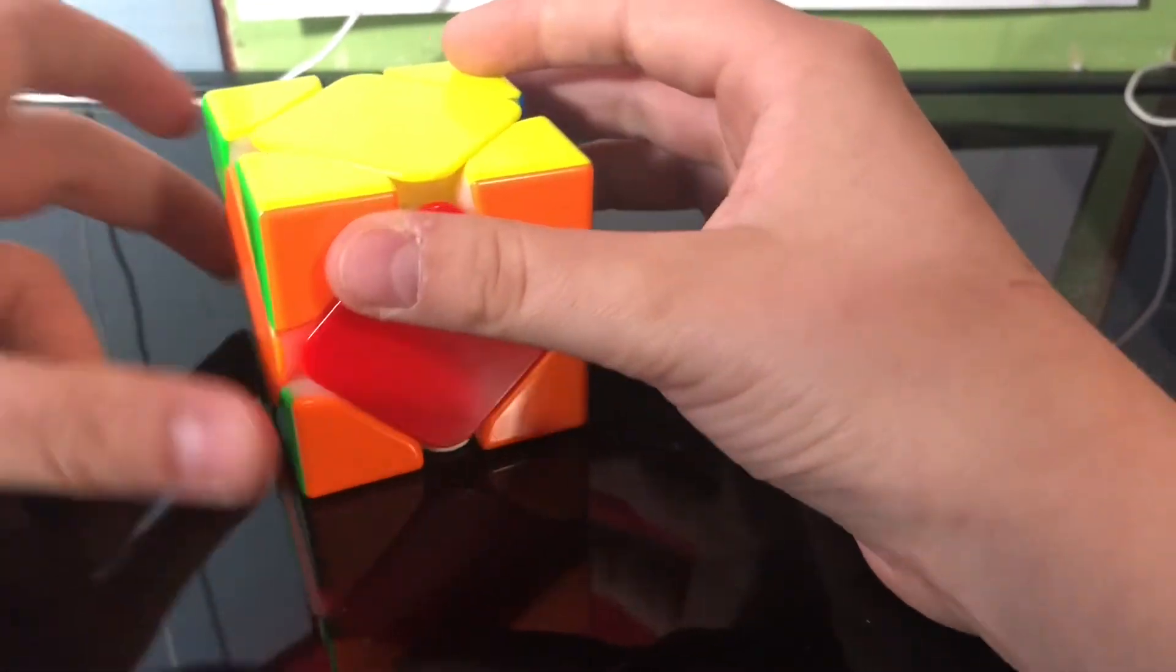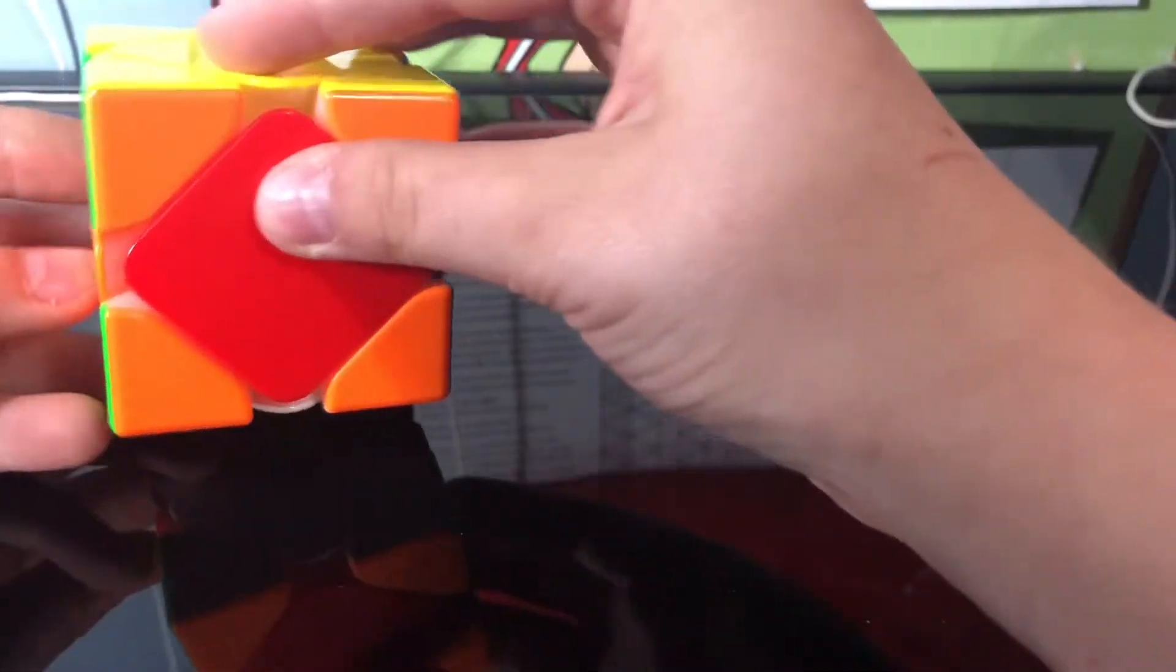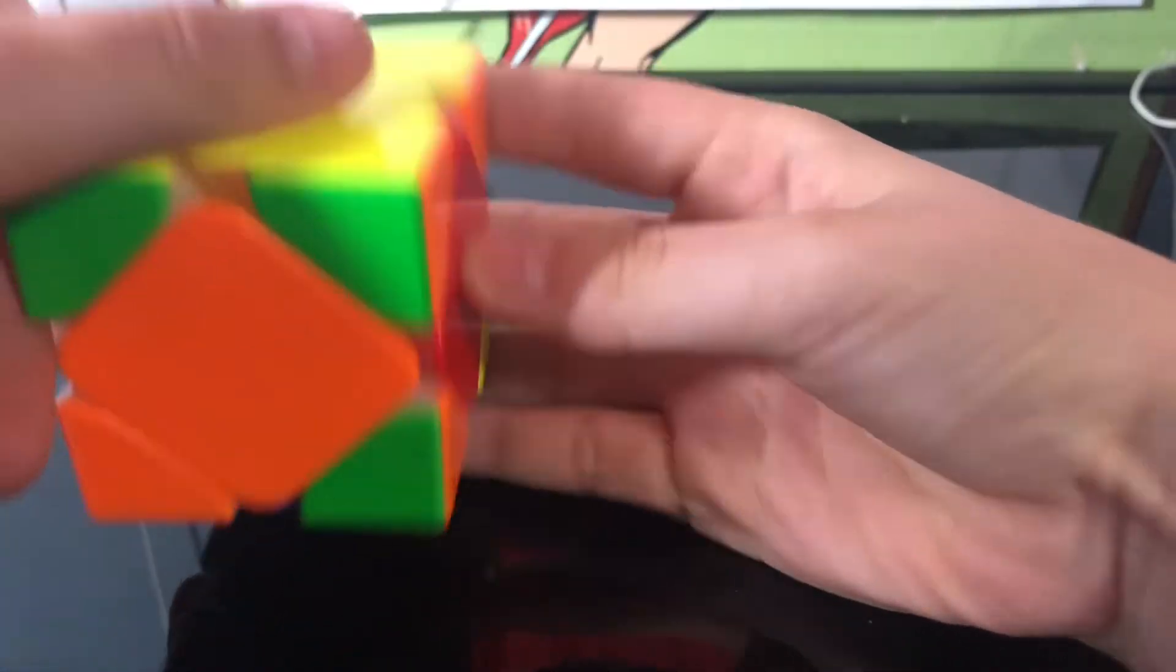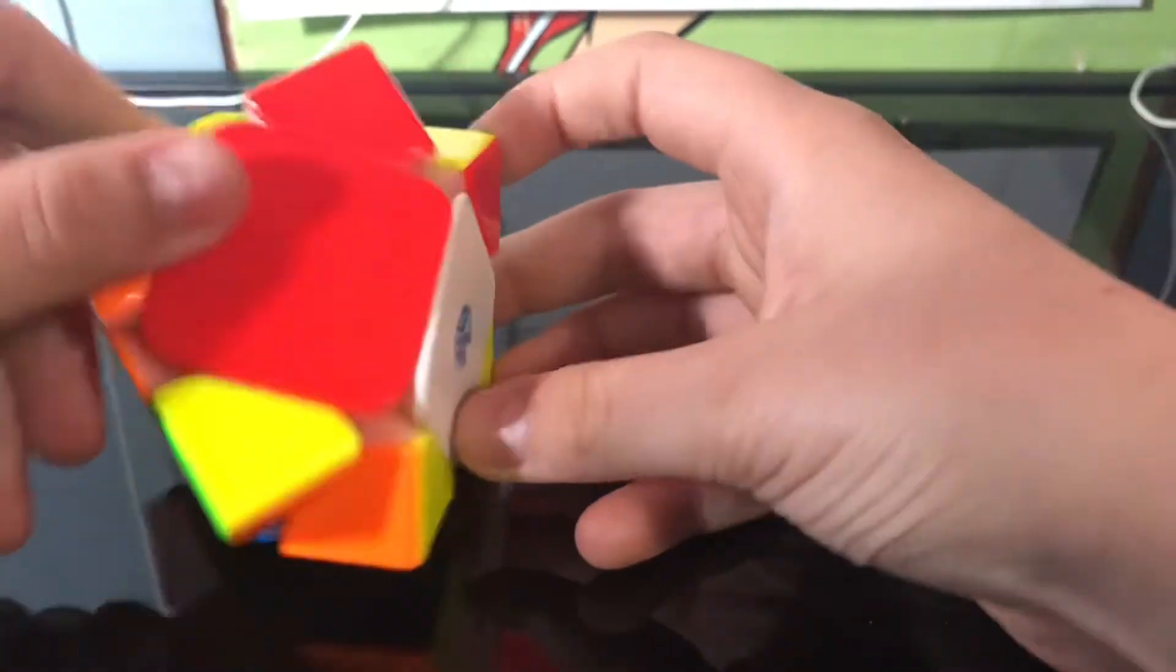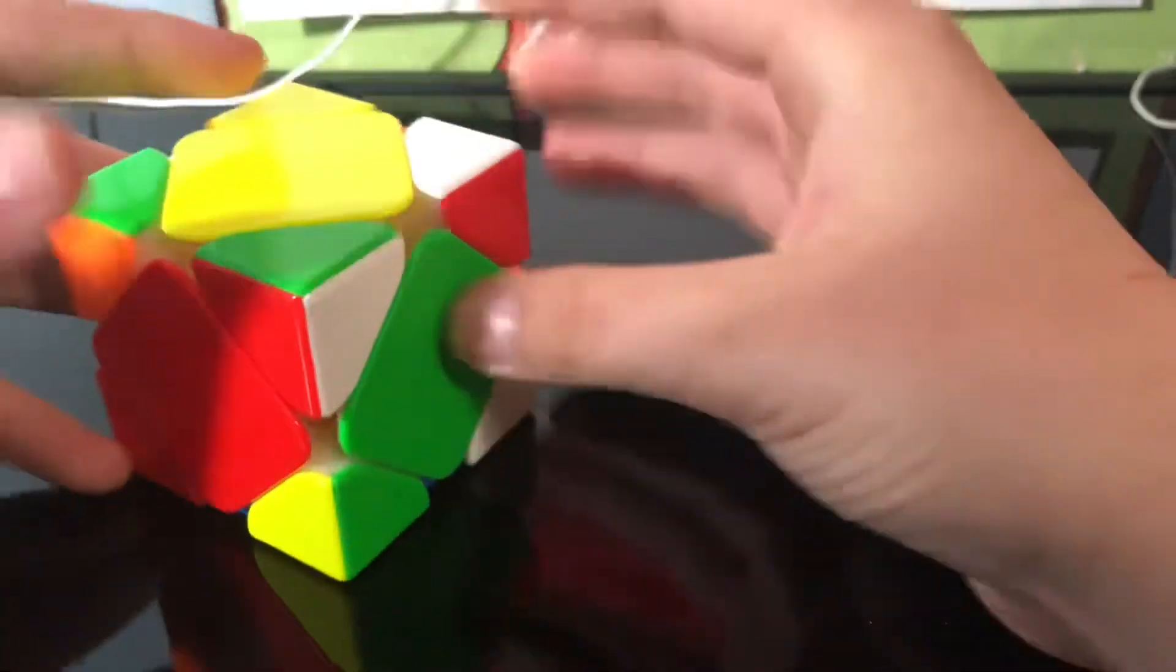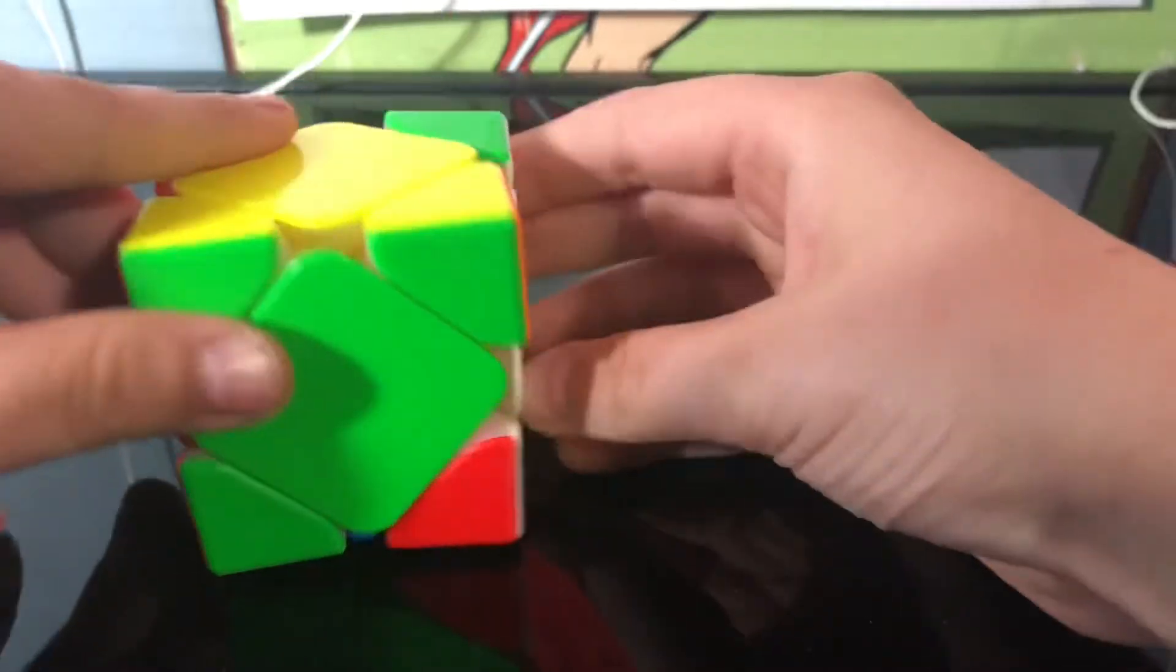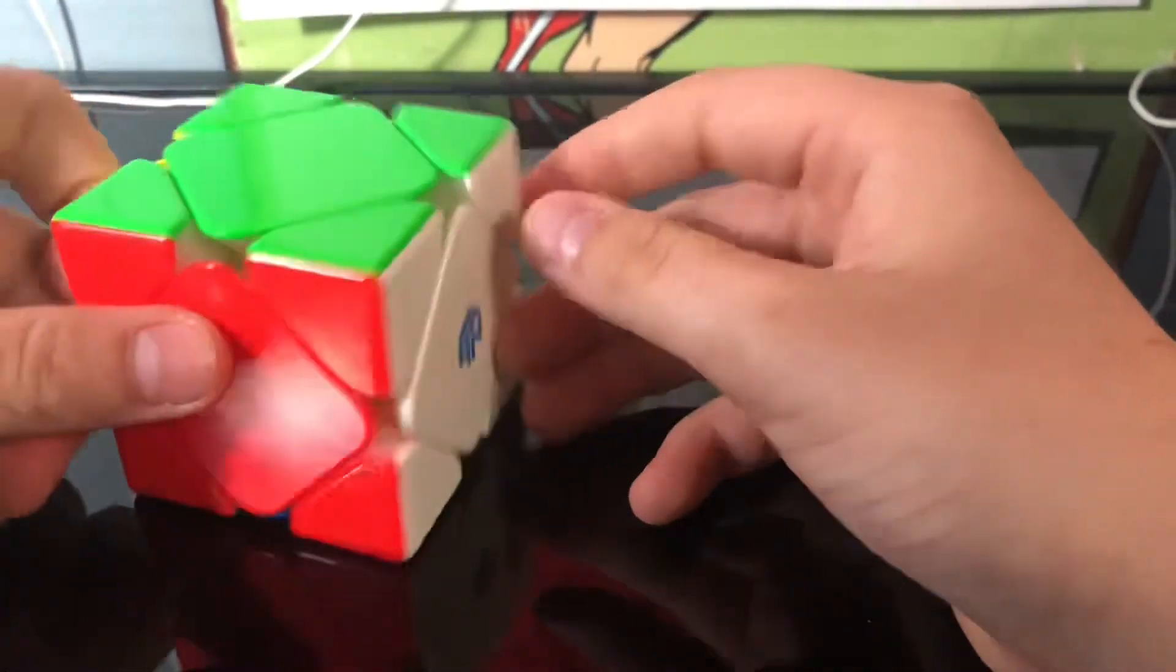So the other algorithm, well the variant that I've done, is: right side down, left side down, right side up, left side up. Turn the cube 180 degrees. Then right side down, left side down, right side up, left side up. Then after you do that, you might have to do it like once or twice.